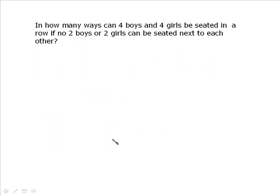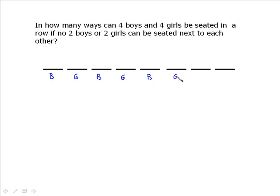In how many ways can 4 boys and 4 girls be seated in a row if no 2 boys or 2 girls can be seated next to each other? They must alternate: boy, girl, boy, girl, and so on. Setting up slots: 4 boys for the boy positions, 4 girls for the girl positions. That gives 4 times 4 times 3 times 3 times 2 times 2 times 1 times 1. You can also think of it as 4 factorial times 4 factorial.